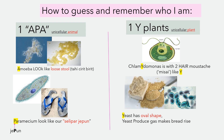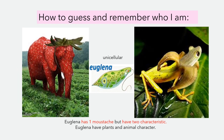Chlamydomonas has two hair-like mustaches, shaped like a Y. Yeast has an oval shape. Yeast produces gas that makes bread rise. Remember, euglena has one mustache but has two characteristics — both plant and animal.